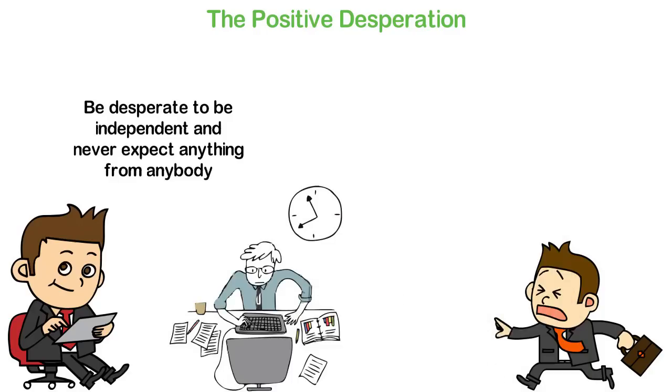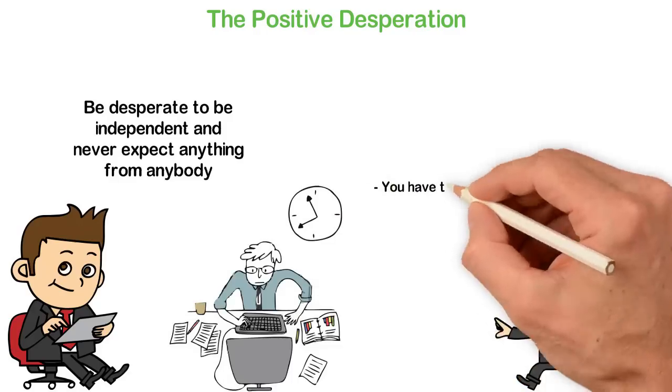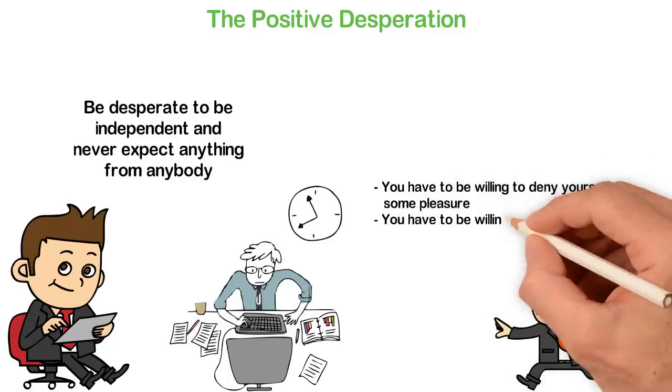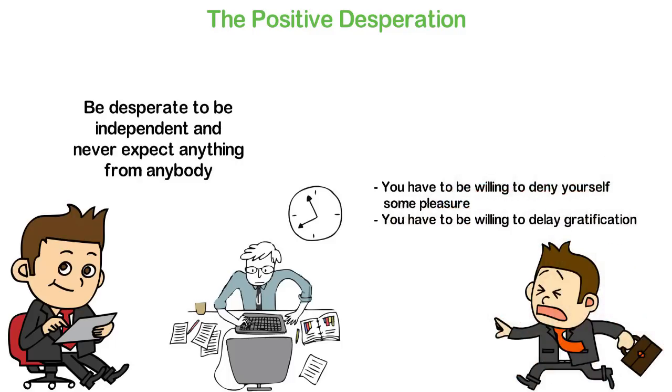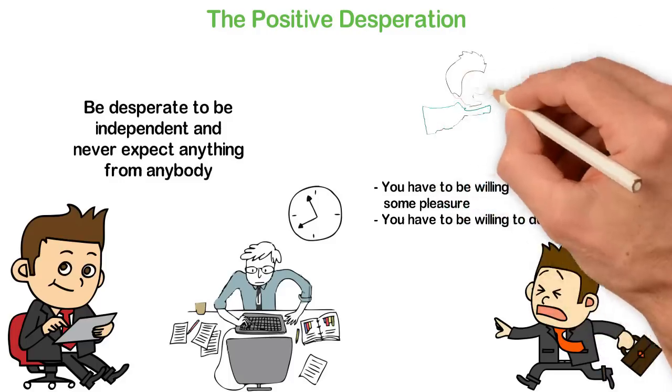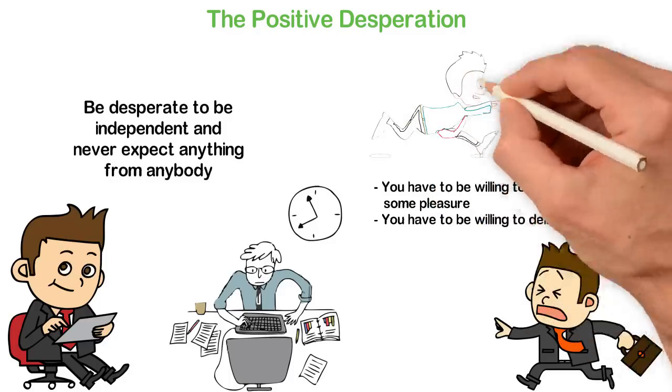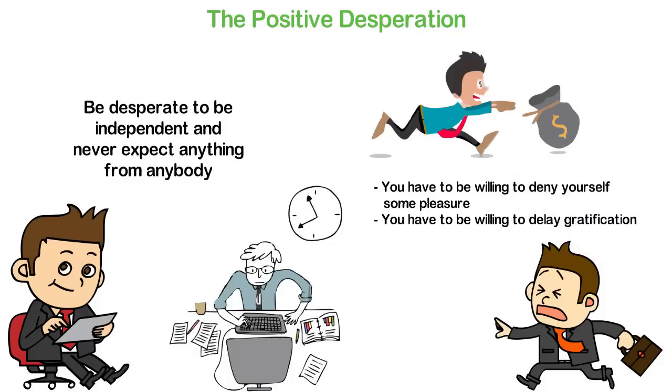You have to be willing to do ugly things. You have to be willing to deny yourself some pleasure. You have to be willing to delay gratification. These are all tough things and you need to be desperate to do them. If you don't want money as bad as you want oxygen, you can't be rich.